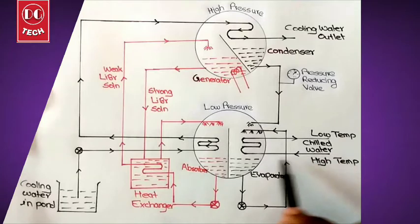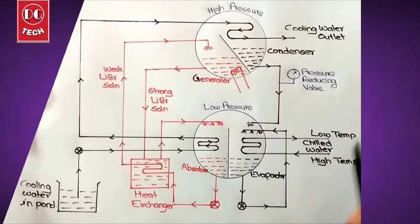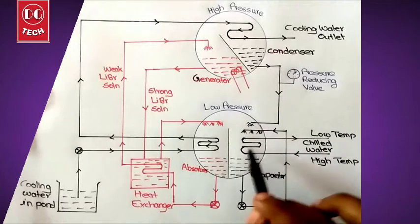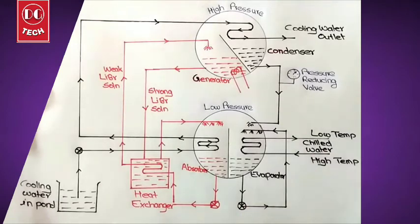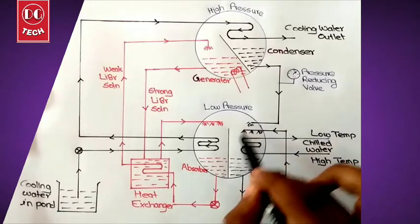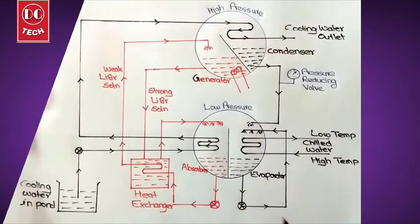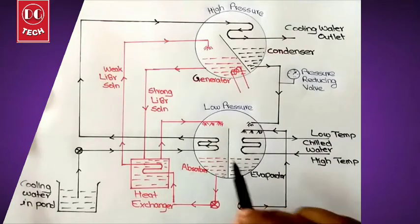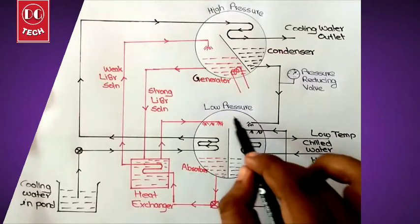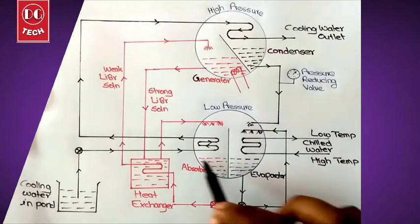We need to get chilled water which is flowing through this pipe. In the evaporator, it is filled with water and using a pump, the water is pumped and sprinkled into the evaporator. Since the pressure of this chamber is less, the water will get evaporated and move towards the absorber.